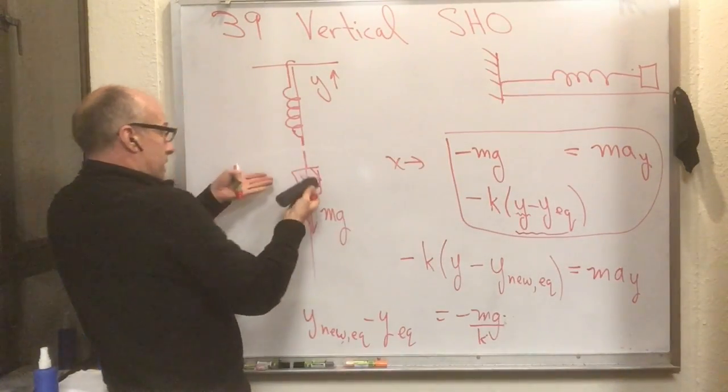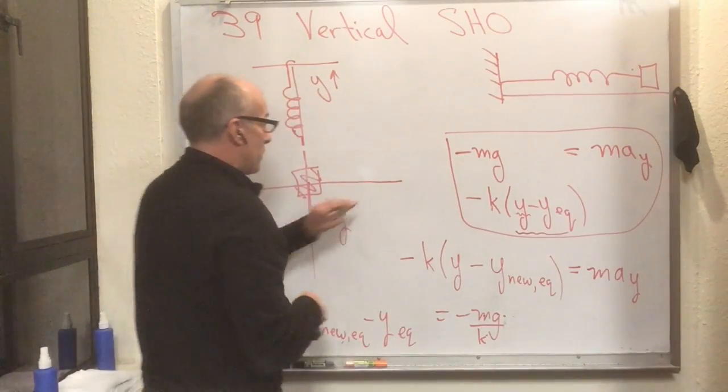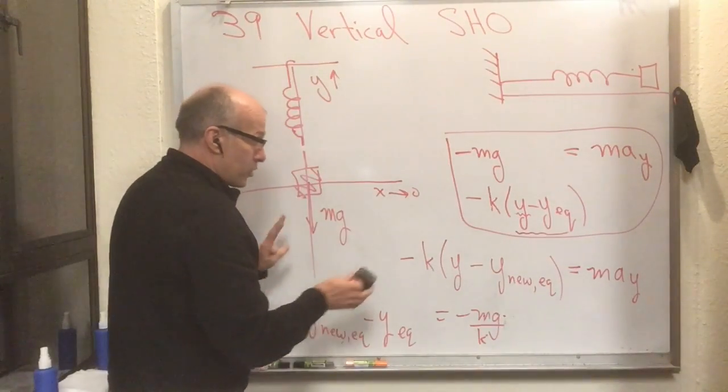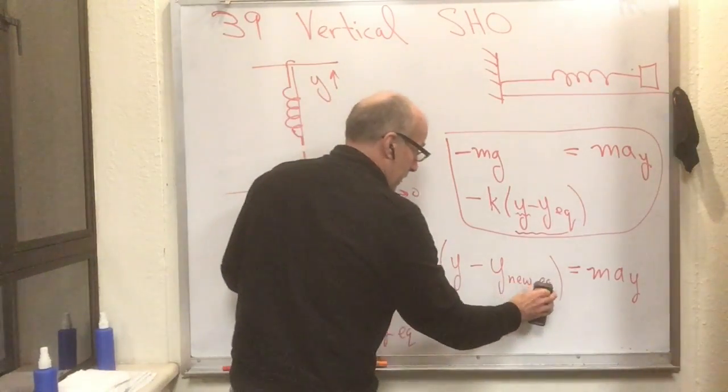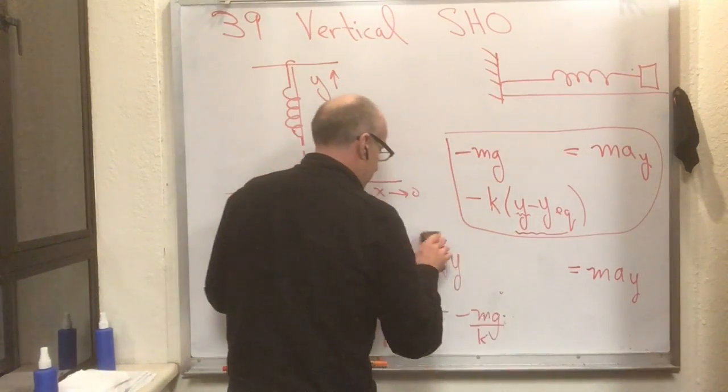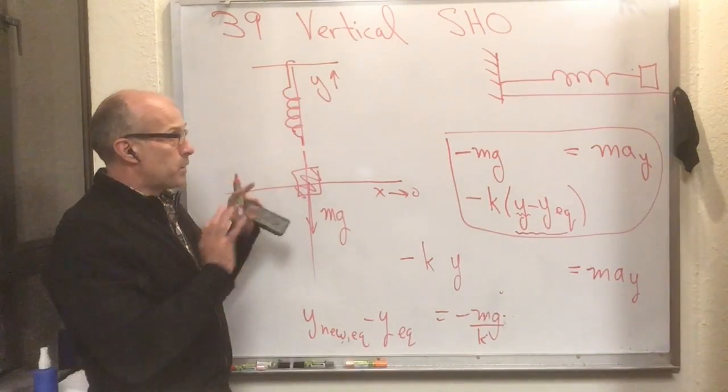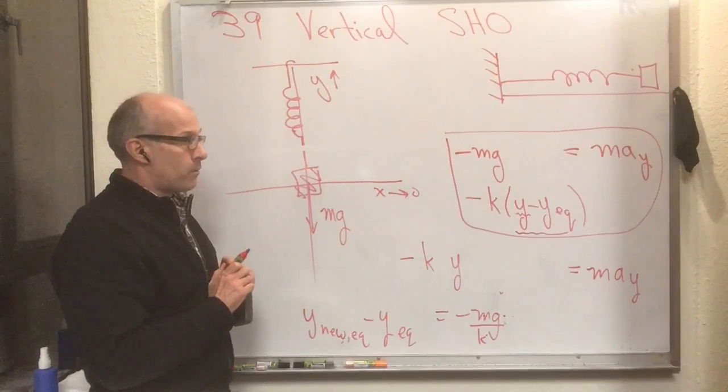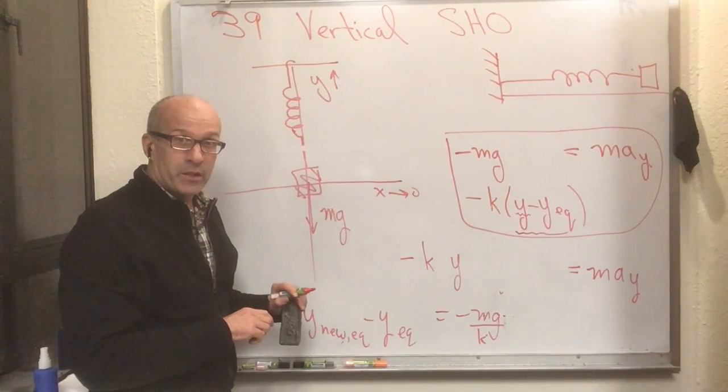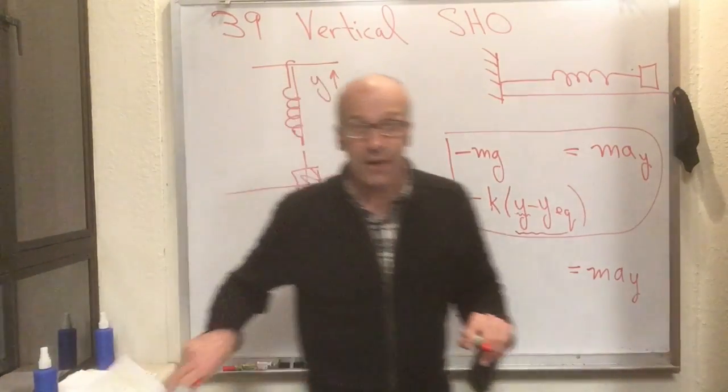So you find the balance point—maybe I'll redraw my horizontal axis and I'll just say that's the balance point. You choose the y equals zero line there. That's a nice coordinate system. You choose it that way so that y_new_eq is zero. And look at that, you're left with m·a = -k·y. So this has been completely reduced to a problem we've already solved. It's just that the equilibrium position is different. That covers section 15.5.